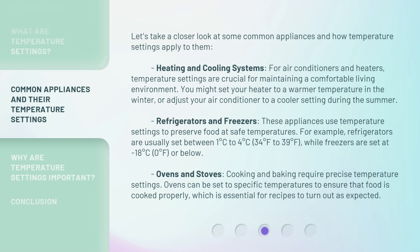Let's take a closer look at some common appliances and how temperature settings apply to them. Heating and Cooling Systems: for air conditioners and heaters, temperature settings are crucial for maintaining a comfortable living environment. You might set your heater to a warmer temperature in the winter, or adjust your air conditioner to a cooler setting during the summer.